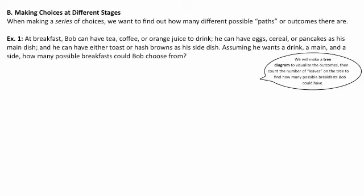Here's our first little part: making choices at different stages. When we want to make a series of choices, we want to determine how many different paths or outcomes there are. Here's example one. At breakfast, Bob can have tea, coffee, or orange juice to drink — three choices. He can have eggs, cereal, or pancakes as his main dish — three choices. He can have toast or hash browns as his side dish — two choices. Assuming he wants a drink, a main, and a side, how many possible breakfasts could Bob choose from? We're going to create a tree diagram to visualize the different outcomes.